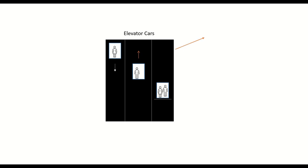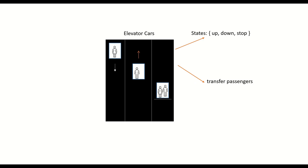The elevator car can be in three states: it can go up, go down, or be at a stop position. The next thing to consider is what an elevator system will do — it will transfer passengers from one floor to another floor.